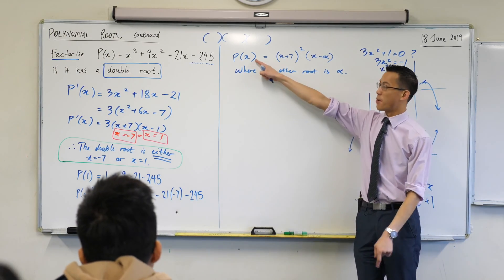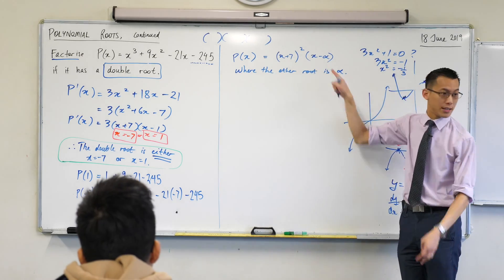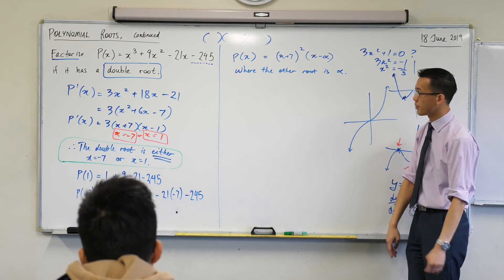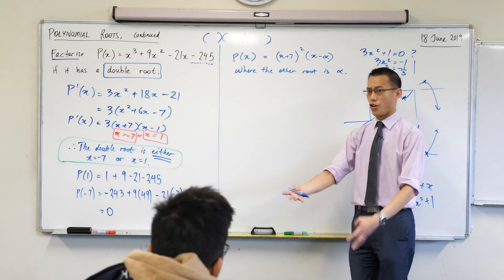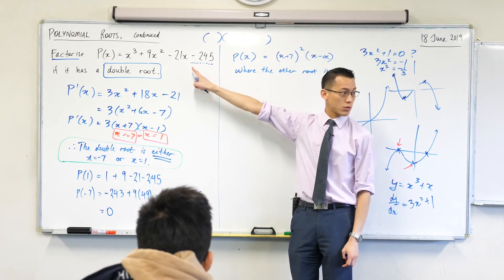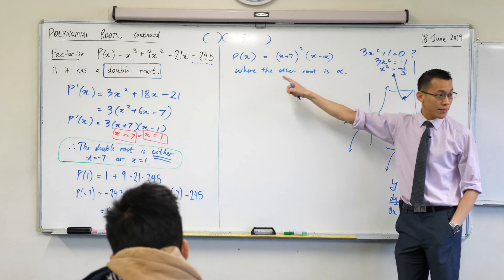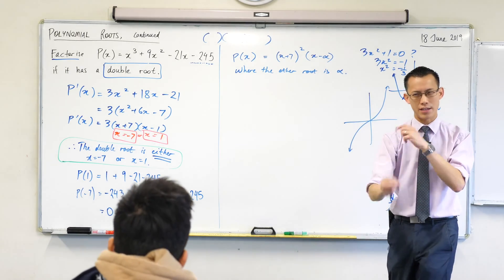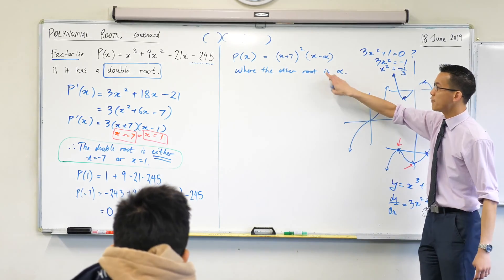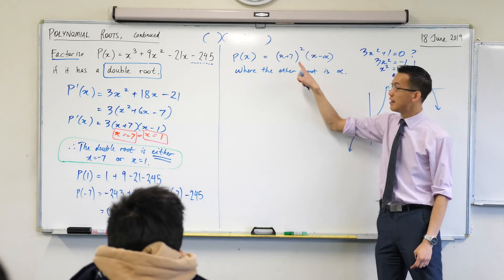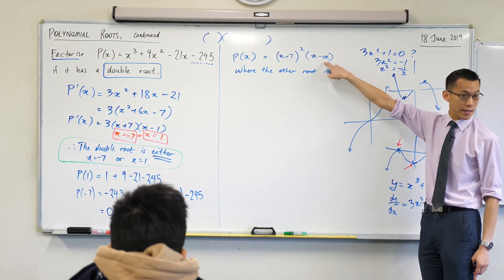Now, watch this. This is so charming. It's just really nice to see how it works, right? I know that my polynomial will eventually look like this, once it's all done and dusted. But I already know, before it's all factorized, that it's equal to this, right? So what I can do is I can just choose a convenient value of x.